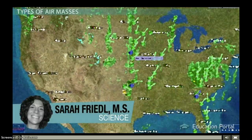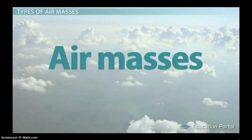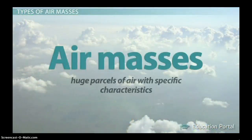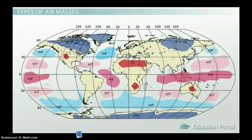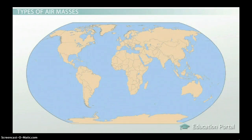Weather is controlled by a variety of factors. One of the most important is Earth's air masses. Air masses are huge parcels of air with specific characteristics. What's interesting about these characteristics is that not only do they describe the air mass, but they also tell you where you can find that air mass on Earth. Let's look at the different types of air masses found on Earth to see how this works.